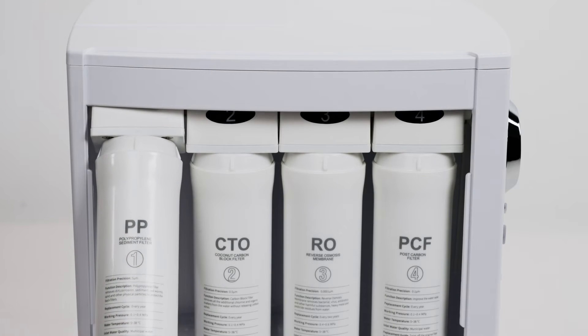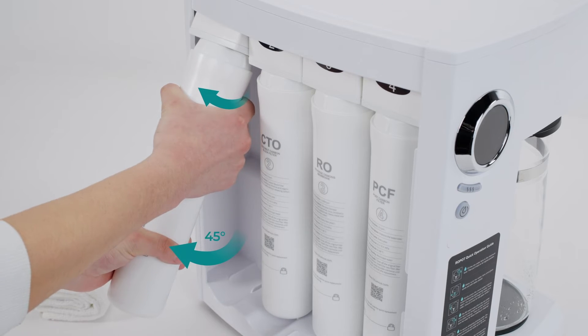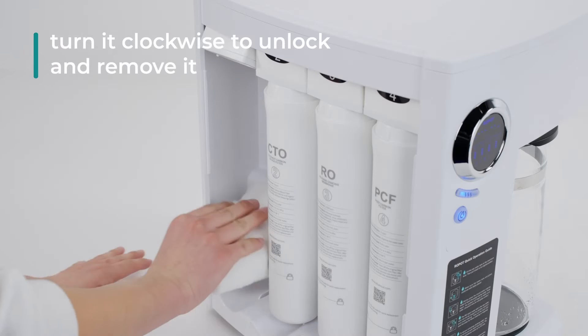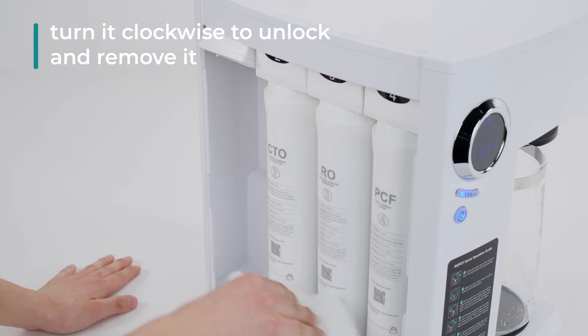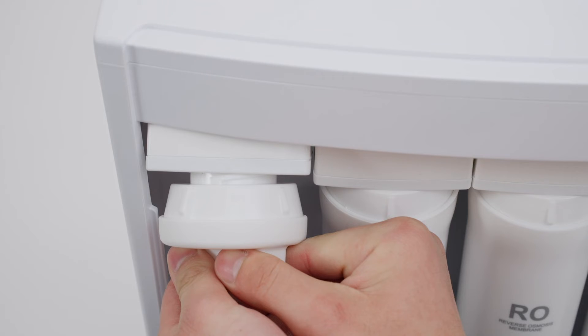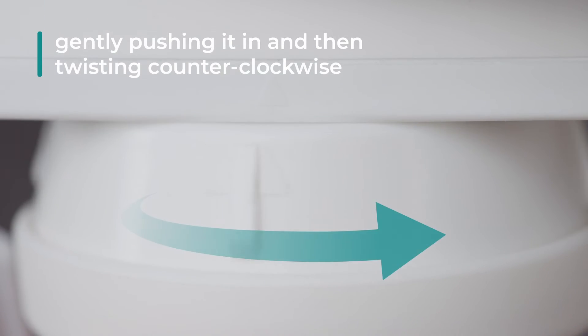Start with the PP filter. Lift the filter to a 45-degree angle, then turn it clockwise to unlock and remove it from its housing. Take one of the descaling kits and observe the triangle icon on top. Align this icon with the corresponding triangle icon on the filter base. Insert the descaling kit into the slot by gently pushing it in and then twisting counterclockwise until it locks into place.